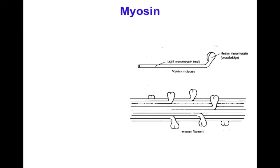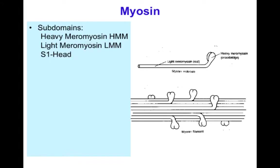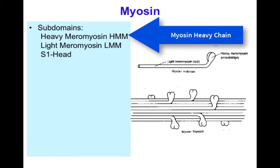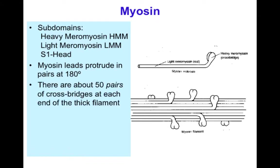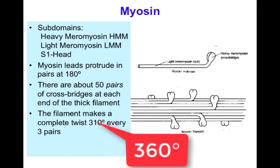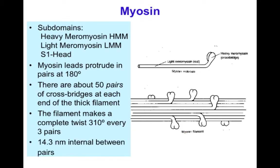The thick filament is made of myosin. The myosin heads — the S1 domain — are the part that interacts with actin. The heads protrude out in opposite directions from the thick filament, 180 degrees apart. There are about 50 pairs of crossbridges at each end of the thick filament, making a twist of approximately a full turn every three pairs, with a 14.3 nanometer interval between pairs — just slightly greater than the distance between the repeating regulatory units of troponin every seven monomers along the actin filament.